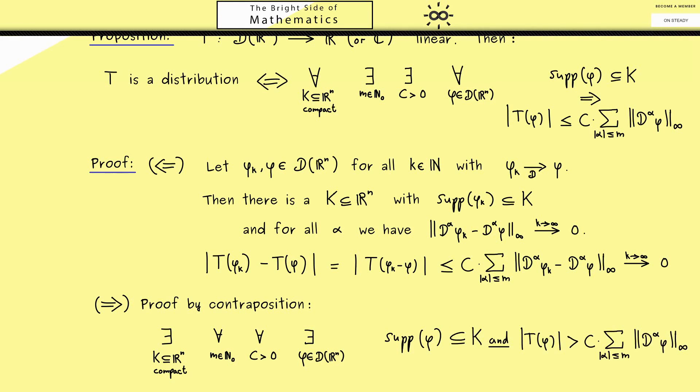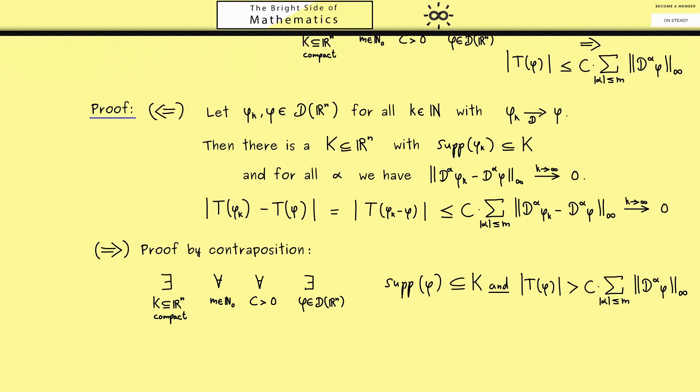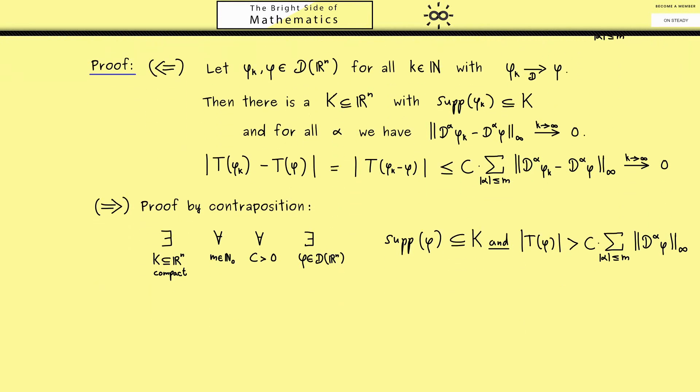So this is our assumption and where we want to get to is that T is not continuous. Now recall this whole thing means there is a compact set, but then no matter which m and c we choose, we always find a corresponding phi. Therefore, let's go through all the natural numbers k for c and m and take the corresponding phi_k.